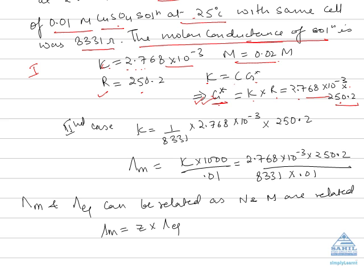For the copper sulfate solution, we first find the specific conductance. Specific conductance kappa equals G* over R, so kappa equals 1 by 8331 (since the resistance of copper sulfate is 8331 ohm), multiplied by the cell constant G* which we calculated as 2.7768 × 10⁻³ times 2250.2.